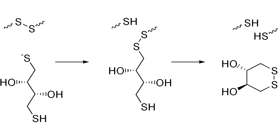DTT is a reducing agent. Once it's oxidized, it forms a stable six-membered ring with an internal disulfide bond. DTT is frequently used to reduce the disulfide bonds of proteins and to prevent intramolecular and intermolecular disulfide bonds from forming between cysteine residues.